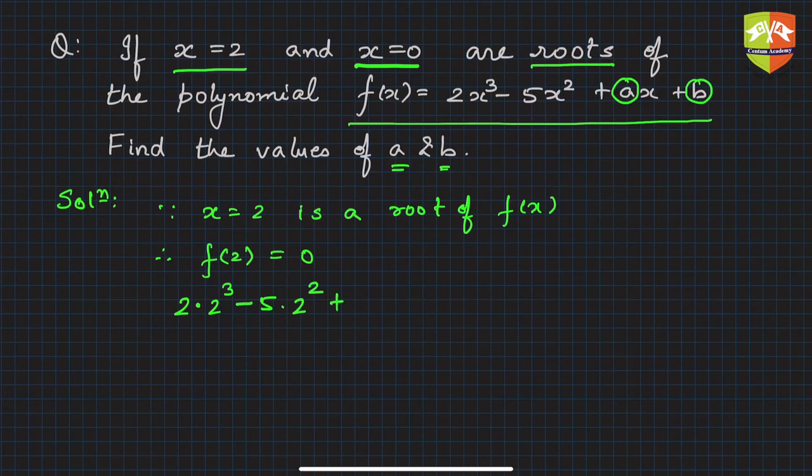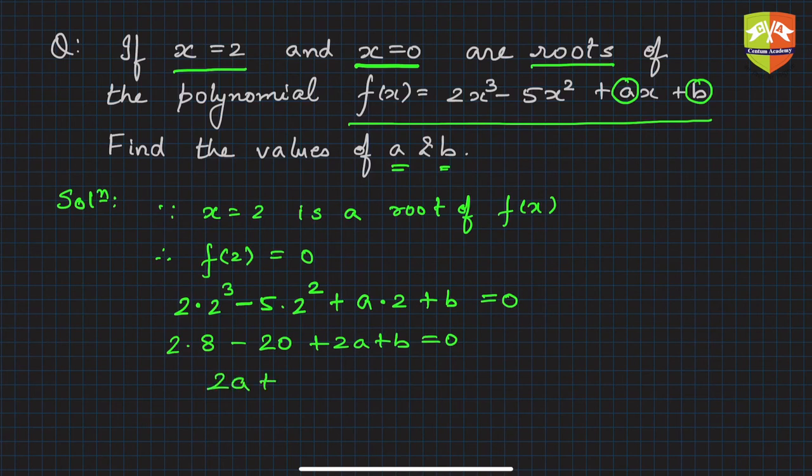a and b are unknown and this happens to be 0. Let's simplify. This is 8 into 2 minus 5 into 4, which is 20, plus 2a plus b equals 0. That means 16 minus 20 is minus 4, so we get 2a plus b equals 4. This is equation number 1.